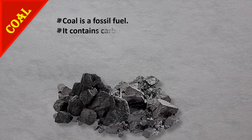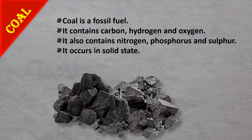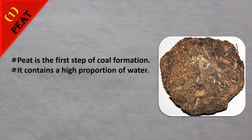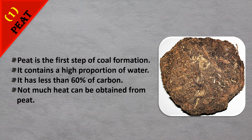The first amorphous form is coal. Coal is a fossil fuel; it contains carbon, hydrogen, oxygen, nitrogen, phosphorus, and sulfur. It occurs in solid state. There are four types of coal. The first type is peat — it is the first step in the formation of coal. It contains a high proportion of water and less than 60% carbon, so when burned, not much heat can be obtained.